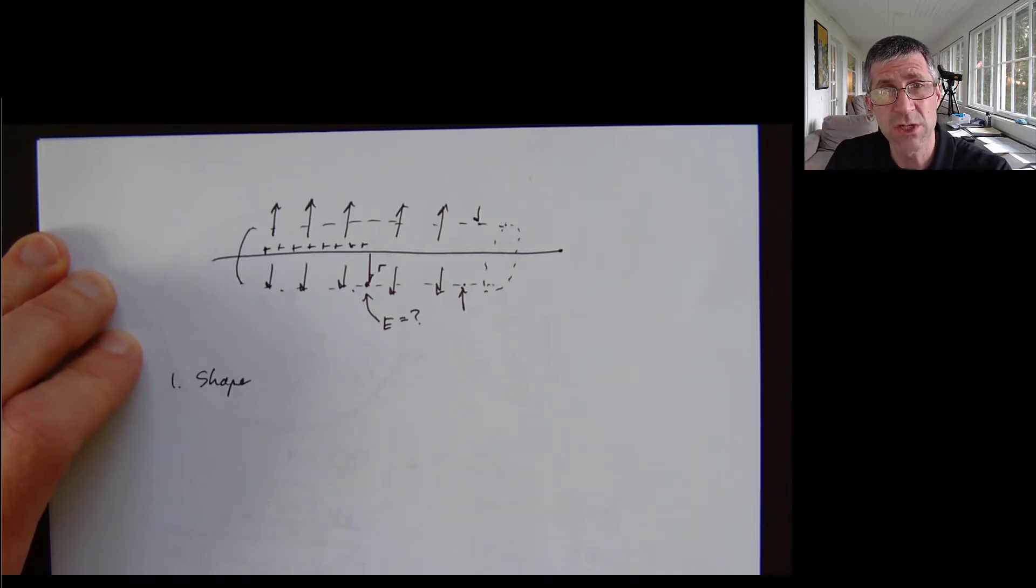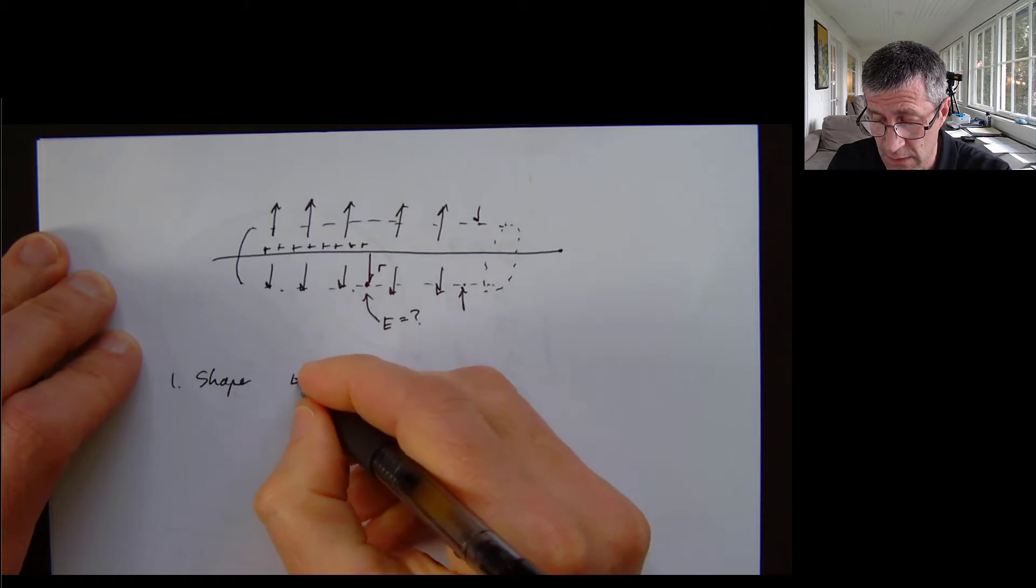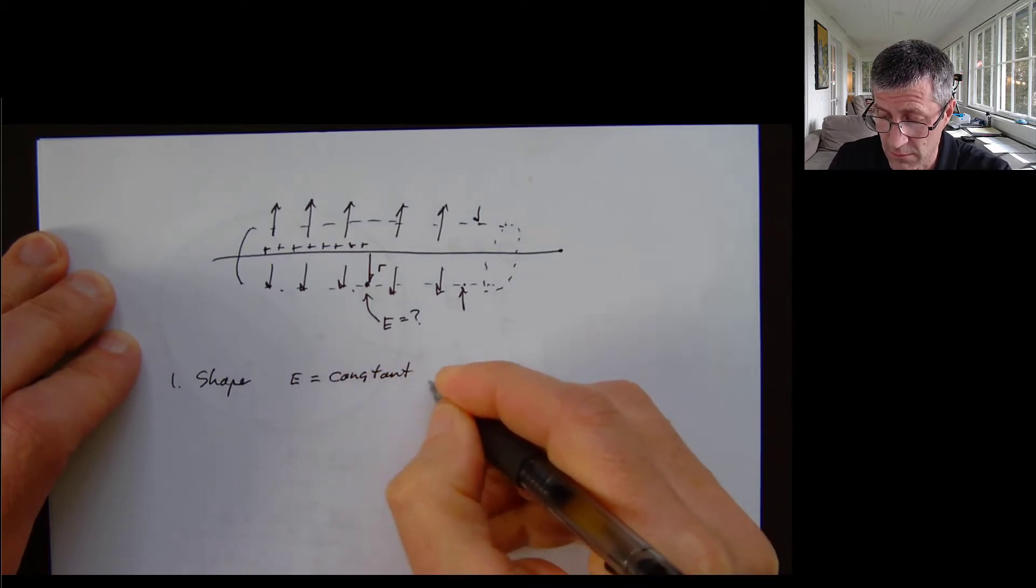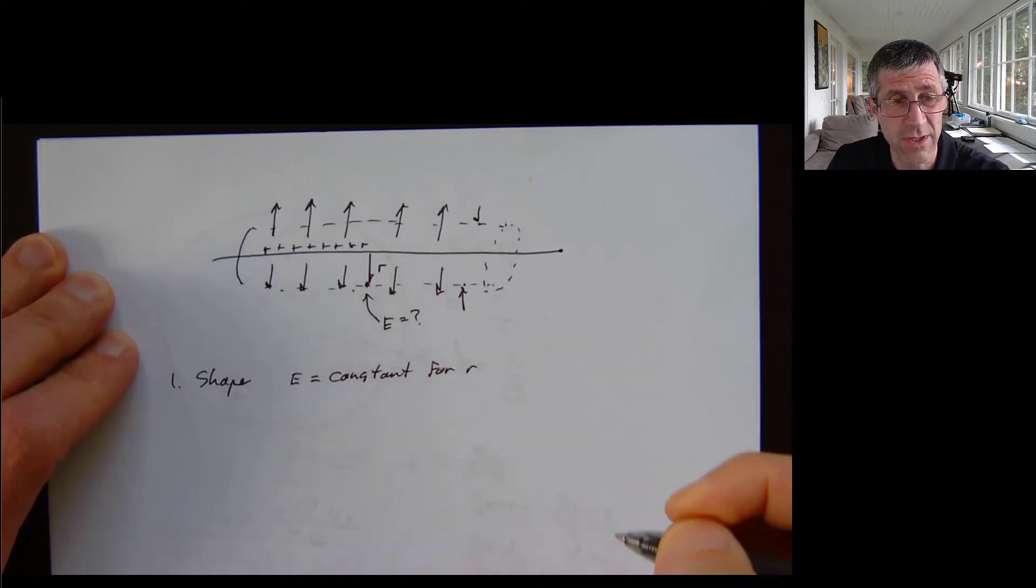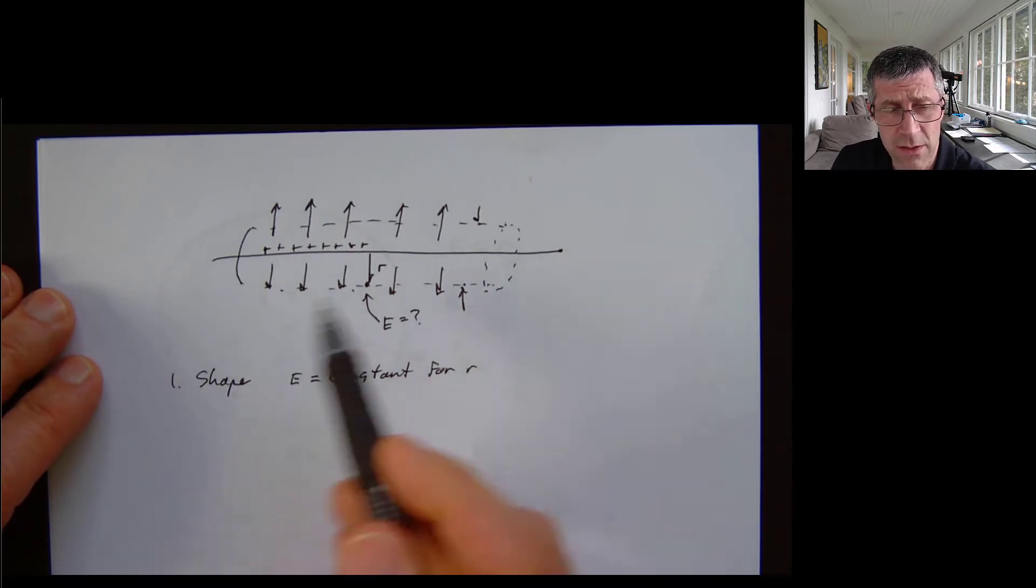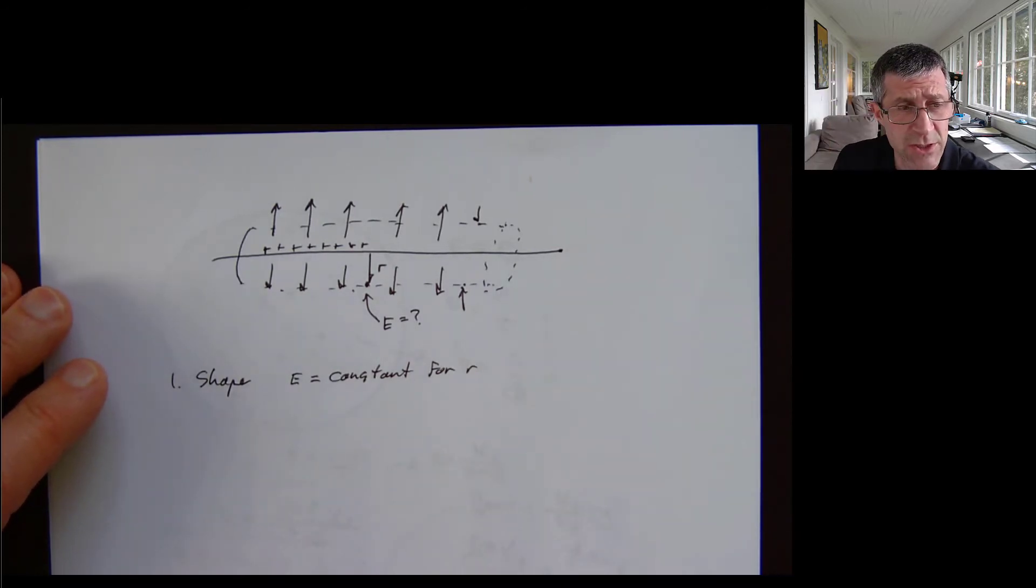So I want to choose the shape intelligently such that my electrical field becomes constant for any r. So for any distance that I am, I could do this for a line that I'm going to use a tube to make that shape.